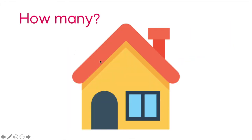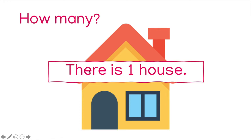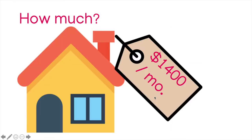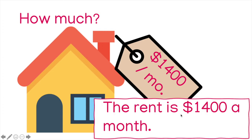And finally, what is this? A house. How many? One. There is one house. How much? This says fourteen hundred dollars, or you can also say one thousand four hundred. This means per month, so this is rent. Every month, fourteen hundred dollars. So how much? The rent is fourteen hundred dollars a month.